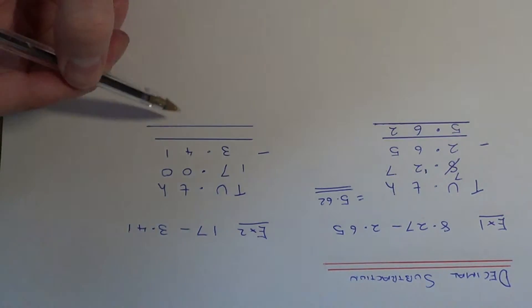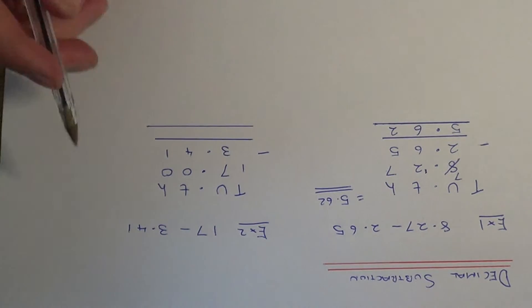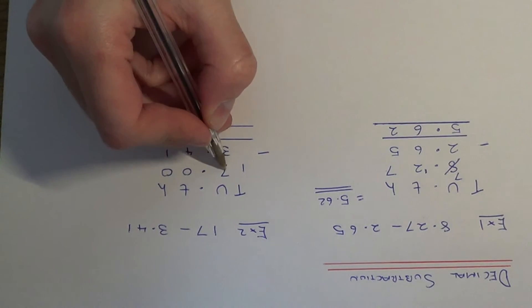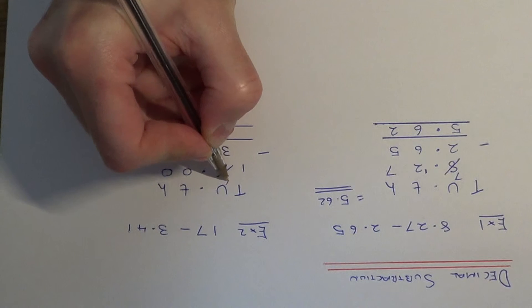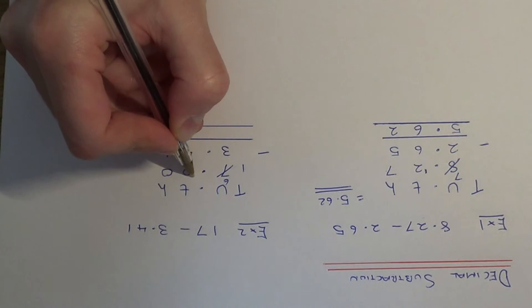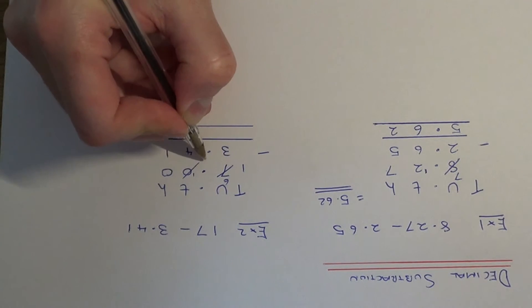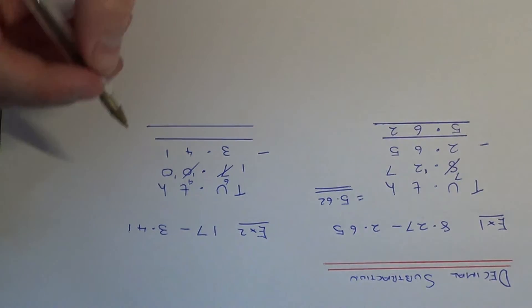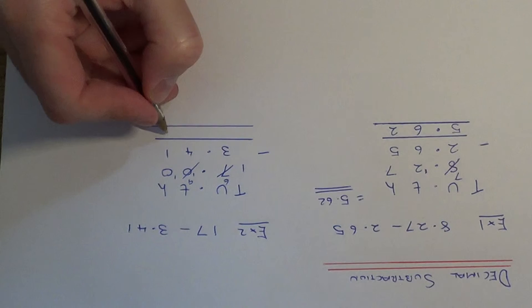So if we start on the right hand side, so 0 take away 1 we can't do, so we need to borrow 1 off the 7, so cross the 7 out, that becomes a 6, pass the 1 to the next column, cross the 0 out, that's a 9, pass the 1 to the end column. So 10 take away 1 is 9.